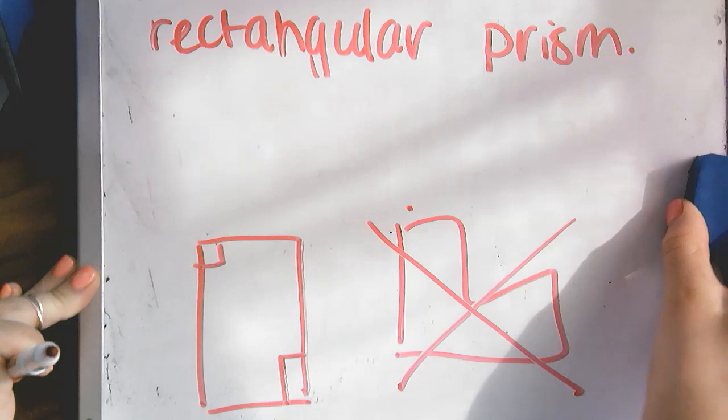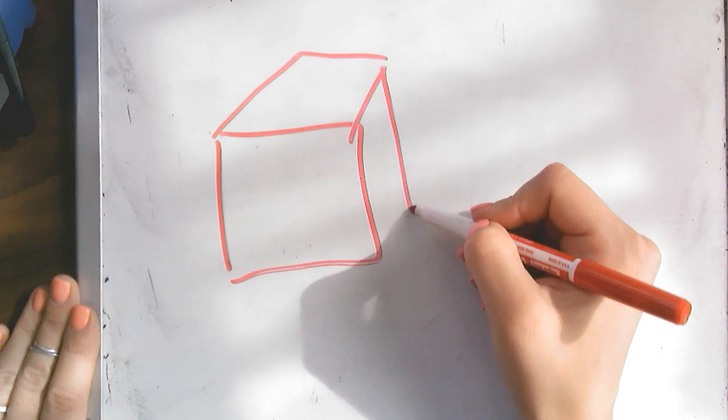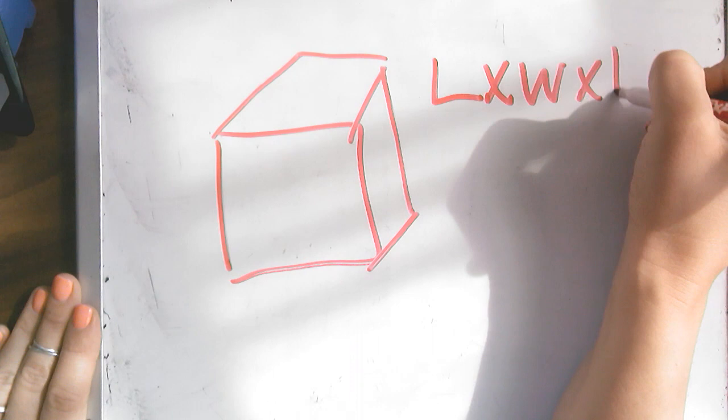So when we have rectangular prisms, we have a rectangle shape. But now instead of being 1D and flat or 2D and flat, it is 3D. And this is when we can apply our length times width times height.